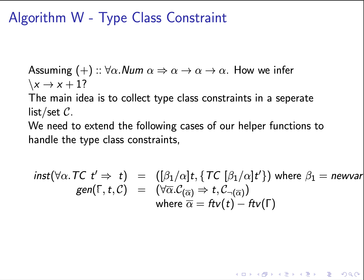For the generalization rule, we take into account not just the type environment gamma but also the current type constraint set C. When we promote a type variable alpha that is free from the type environment gamma and free in T, we also need to take care of the type class constraints mentioning alpha and promote them into the type class context in the type scheme. We only keep the type class constraints that do not mention alpha as the output constraint set.